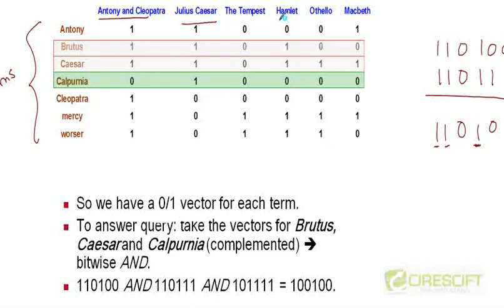this play, this play and this play, first, second and the fourth play contain both the two words Brutus and Caesar. And the way we figure out is we can simply take the AND, the bitwise AND of the two vectors and see which positions contain the bit 1.